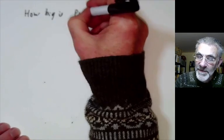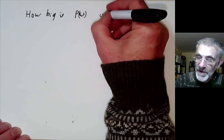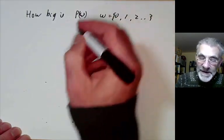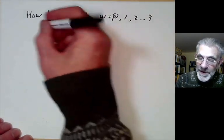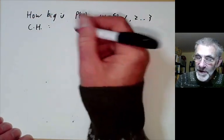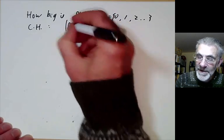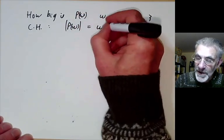For example we can ask how big is, say let's just take the power set of the integer of omega, the natural numbers. And this leads to one of the most famous open questions in mathematics which is the continuum hypothesis often abbreviated as CH. So the continuum hypothesis says the cardinality of the power set of the integers is equal to omega one.